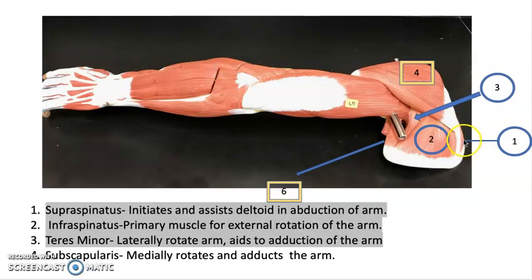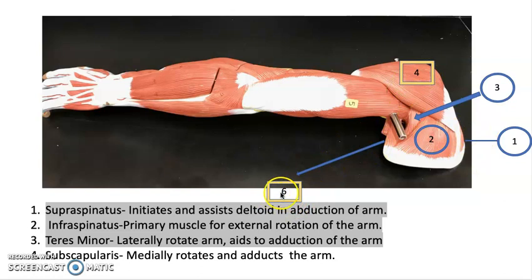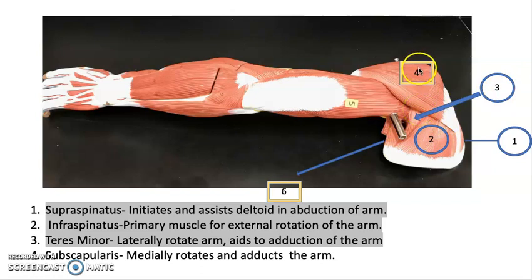Can you recognize these muscles? Number one is supraspinatus, number two is infraspinatus, and number three is teres minor. All three are labeled in blue — this is the posterior surface, which is why we can only see three. On the anterior surface, the subscapularis muscle is also part of the rotator cuff. I also wanted to label muscles that are not part of the rotator cuff but may cause confusion during an exam. Number six is teres major, which is not part of the rotator cuff, while number three, teres minor, is. Number four is the deltoid muscle and number five is the triceps brachii.